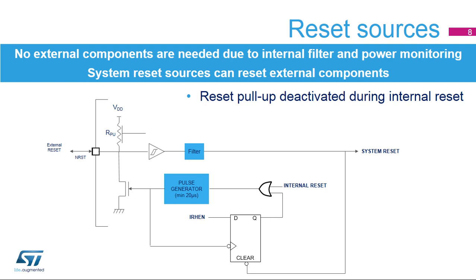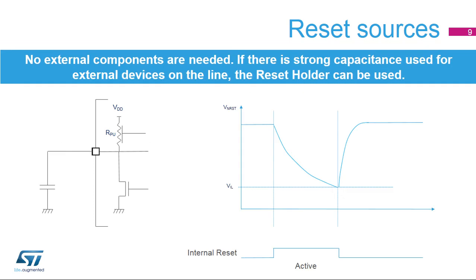The internal pull-up is deactivated when an internal reset is driven, in order to reduce power consumption under reset. Additionally, except the debug pins and some test pins, all I/O pins are placed in analog mode during and after reset to eliminate power consumption through the Schmidt trigger when the I/Os are floating under reset and before software initialization. The purpose of the reset holder is to maintain NRST driven low until the voltage level of the signal goes below VIL, which is useful when the NRST line has an important capacitive load.